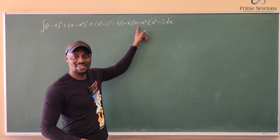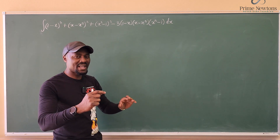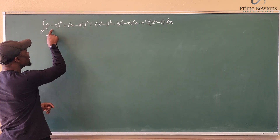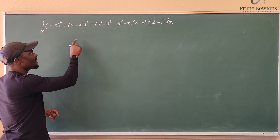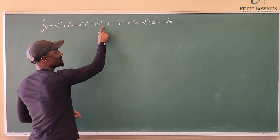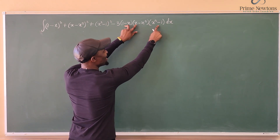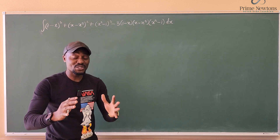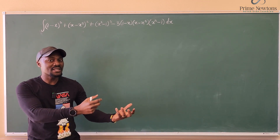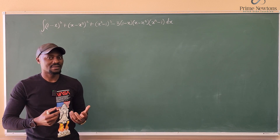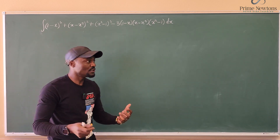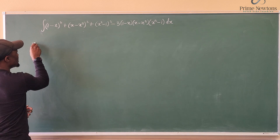Going back and thinking about it, it looks like I have three (1-x) factors in each term — three of them here, three here, three here, and three here. So my first focus is to take as many (1-x)'s out as possible.